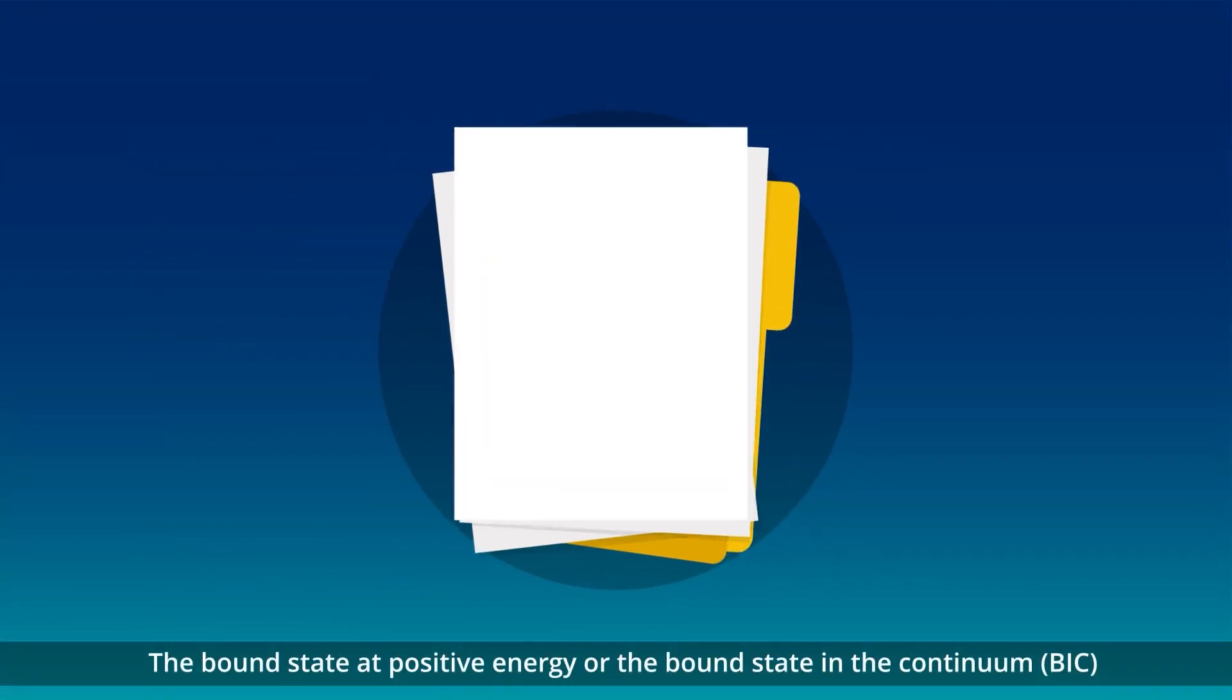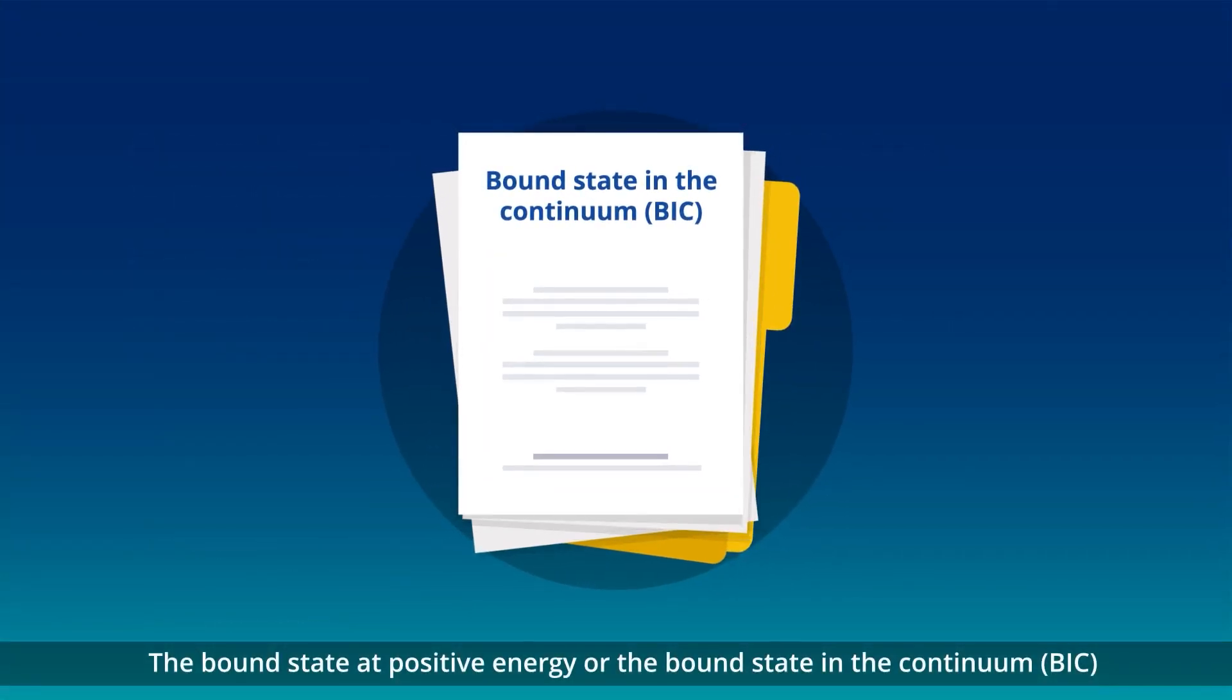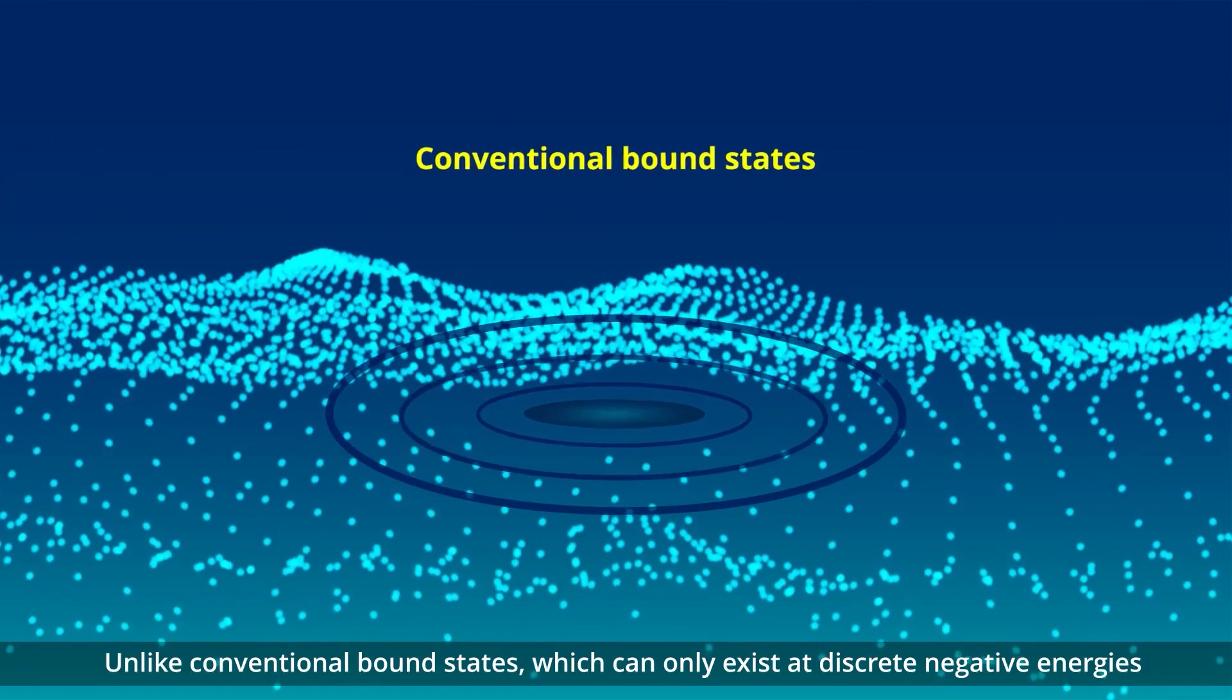The bound state at positive energy, or the bound state in the continuum, or BIC, was first predicted by von Neumann and Wigner in 1929.